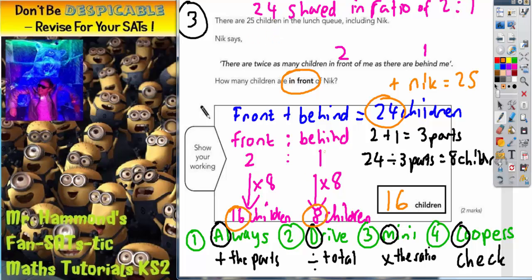A quick recap. Step one — always add the parts: two plus one is three parts. Step two — divide the total: 24 children divided by three parts is eight children. Step three — multiply the ratio by eight: two lots of eight is 16 children, which is our answer; one lot of eight is eight children. Step four — check: 16 children and eight children makes 24 children, so everything seems to fit.